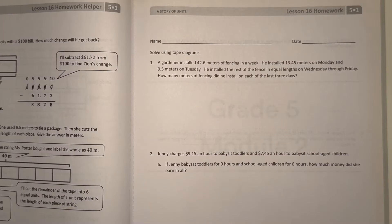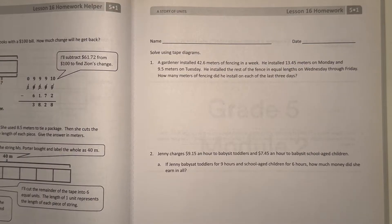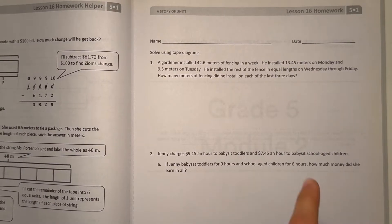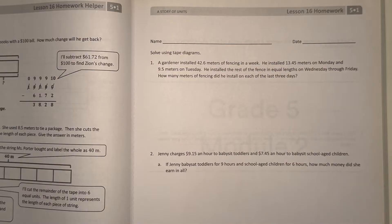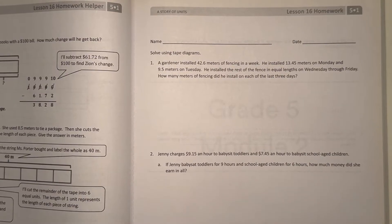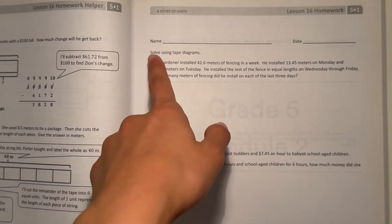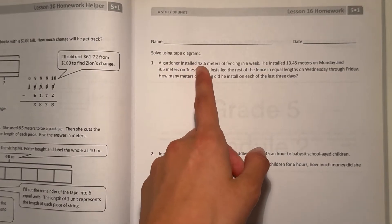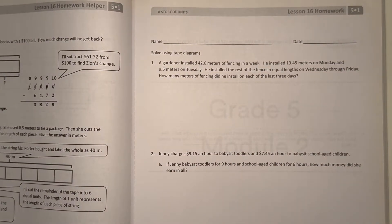Hey guys, today I'm doing the Eureka Math Grade 5 Module 1 Lesson 16 homework. So let's get started. Solve using tape diagrams. Number one: the gardener installed 42.6 meters of fencing in a week, so we know the total we're looking at right now is 42.6.